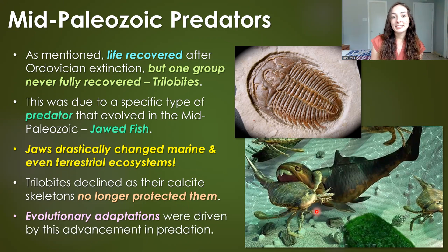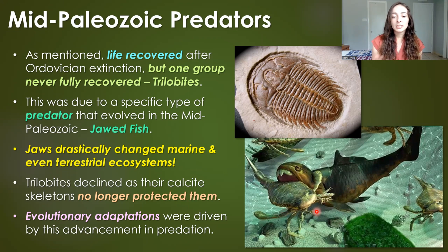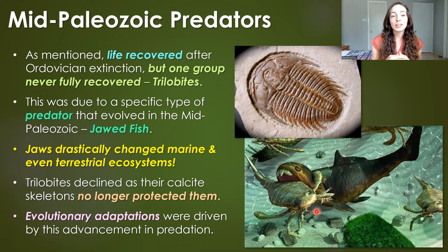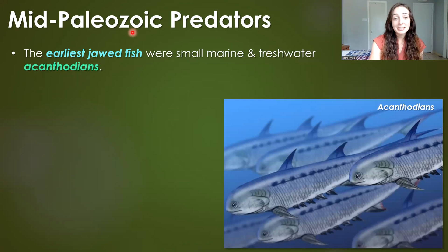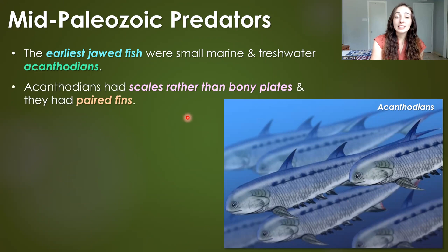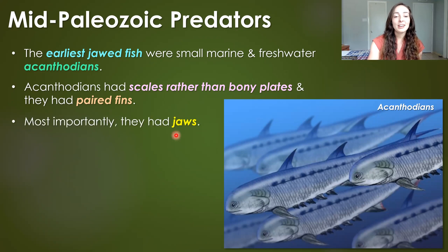Predation, even though it looks scary, isn't always bad — evolutionarily it's one of the major driving factors for adaptations in prey animals. Those would have had to evolve adaptations or die. The earliest jawed fish were small, lived in both marine and freshwater, and were called acanthodians. They had scales rather than bony plates like the ostracoderms, and they had paired fins. But the most important feature they had, of course, was jaws.